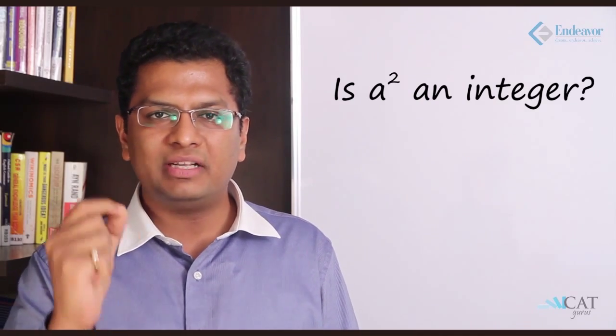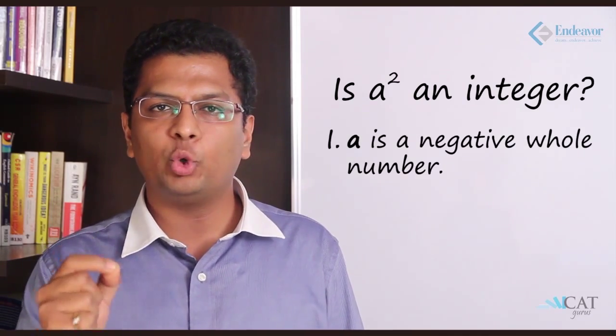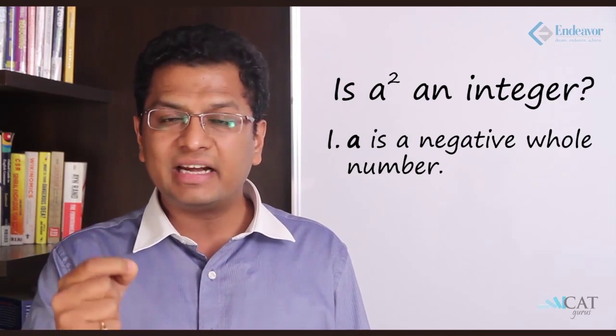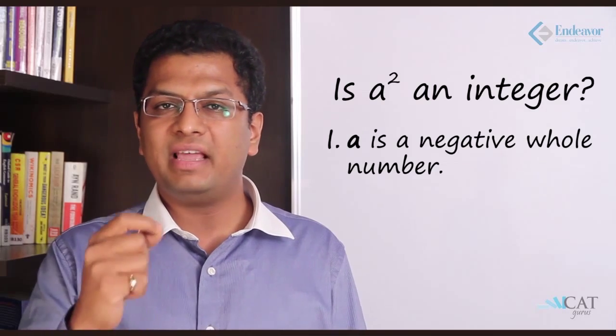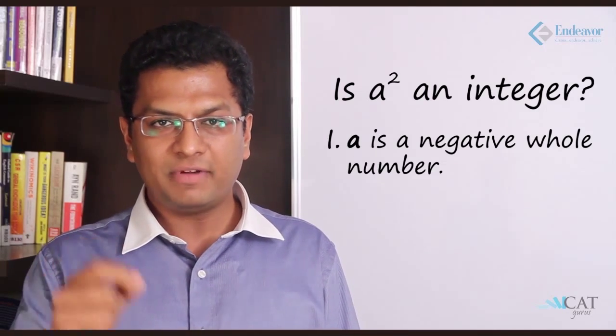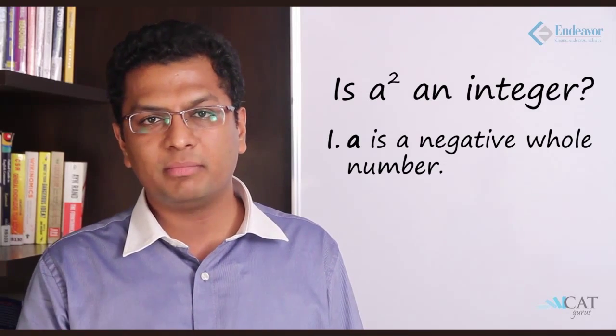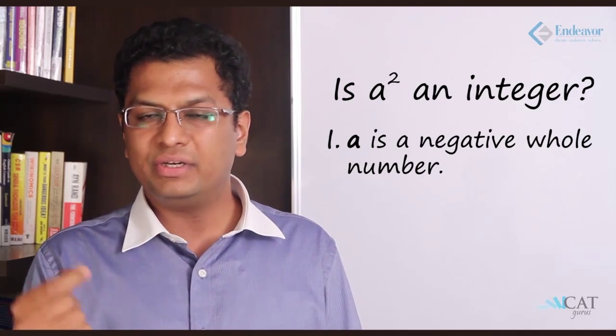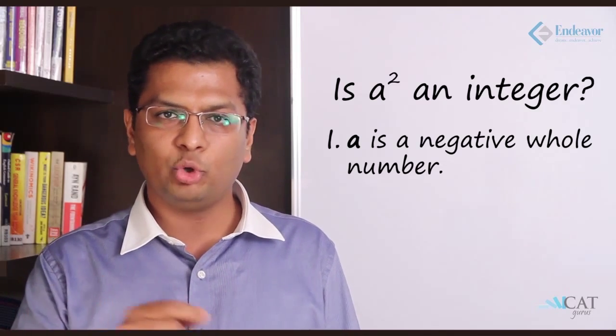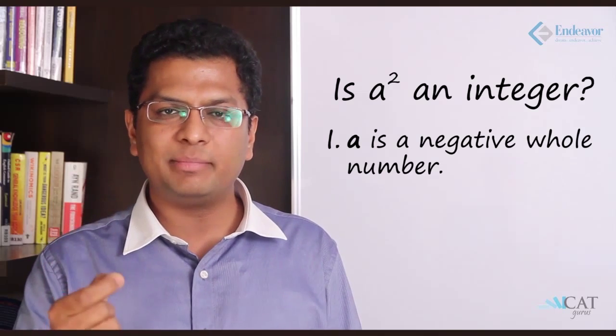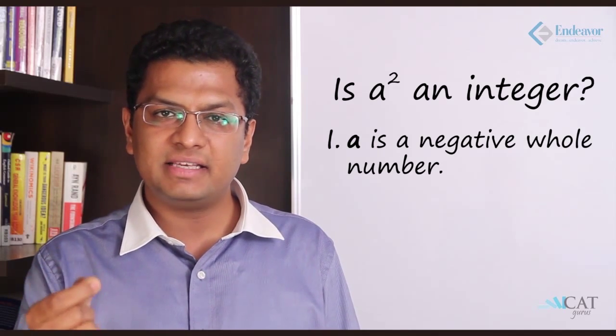Let's take an example. The question is: is a² an integer? Looking at statement one — 'a is a negative whole number.' Whole numbers are integers, both negative and positive. If a is a negative whole number and we square it, the result will also be a whole number, positive this time. So from statement one, we can confirm that yes, a² is an integer.